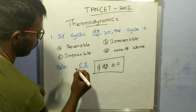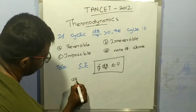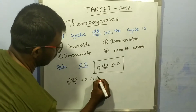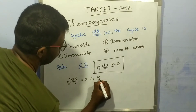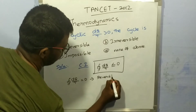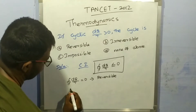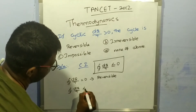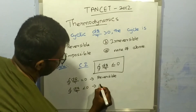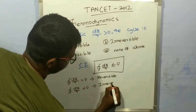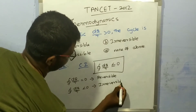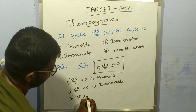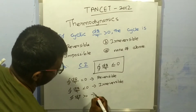When dQ/T equals zero, the process is reversible. When dQ/T is less than zero, the process is irreversible. And when the cyclic integral of dQ/T is greater than zero, this is impossible.